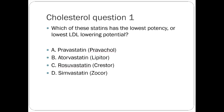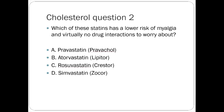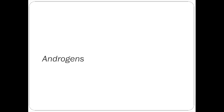Statin review: Which statin has the lowest potency or lowest LDL-lowering potential? Pravastatin. Atorvastatin, rosuvastatin, and pitavastatin are high potency; simvastatin is medium-high. Which statin has a lower risk of myalgia and virtually no drug interactions? Also pravastatin. Simvastatin has the most drug interactions; rosuvastatin and atorvastatin are in the middle.